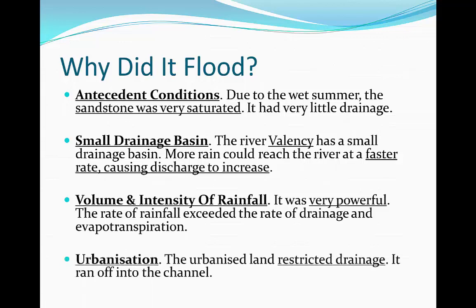Urbanisation did play a role in the flood as well. Boscastle is a very urbanised area, so the land — for example, the pavements — restricted drainage. As a result, all the water then ran off into the channel.